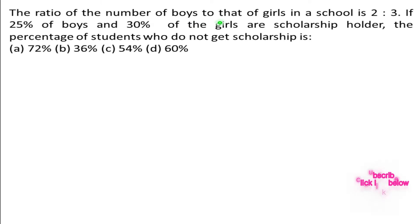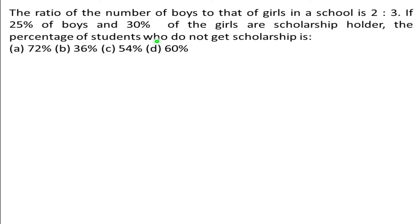The ratio of the number of boys to that of girls in a school is 2:3. If 25% of boys and 30% of the girls are scholarship holders, the percentage of students who do not get scholarship is: (A) 72%, (B) 36%, (C) 54%, (D) 60%.